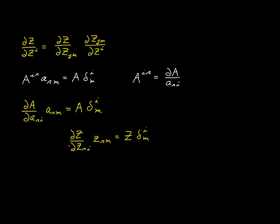We can apply this model to the first term: the partial of z with respect to z_ri contracted with z^rm is going to be equal to z times δⁱₘ. Now the next thing we're going to do is to try to isolate this partial derivative. We do that by contracting both sides of this expression with the contravariant metric tensor z^mk. On the left side, this term and this term together will produce a δᵏᵣ, and the r index will be absorbed, leaving us with a k index. On the right-hand side, the Kronecker delta will absorb the m index, leaving us with an i in that position.